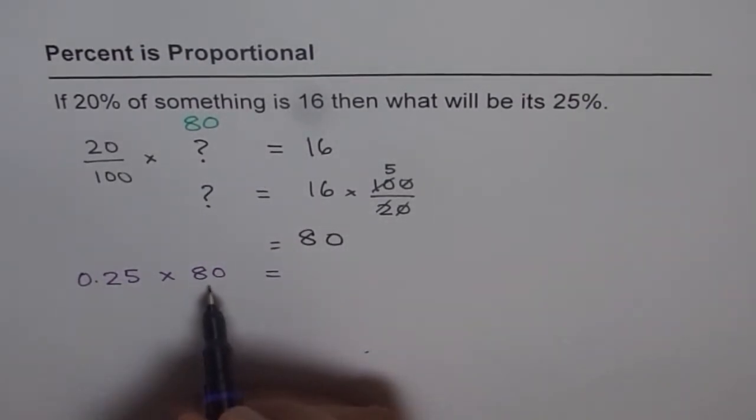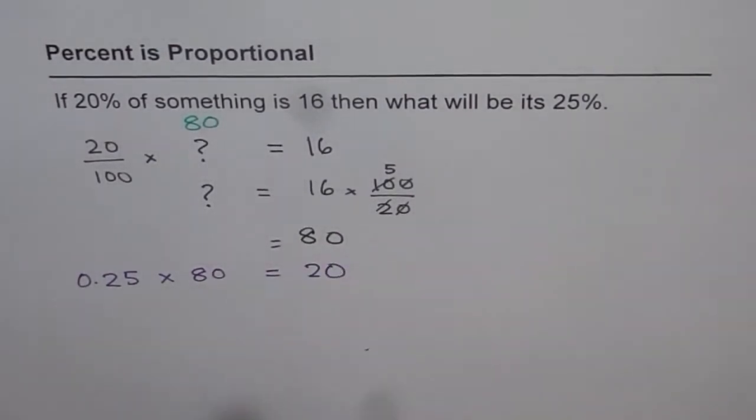25% is 1 fourth, half is 40, and half of that is 20. We get answer as 20.